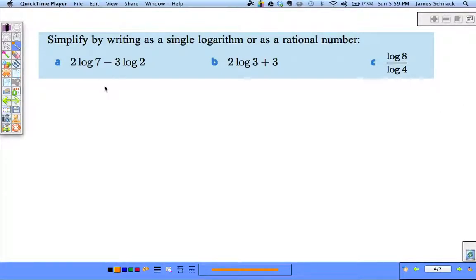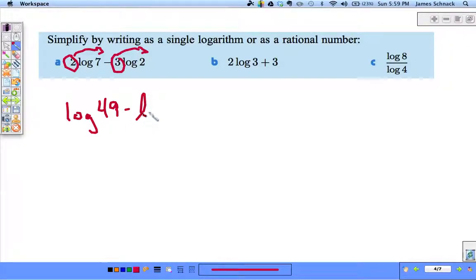Now, let's combine these together a little bit more. Similar questions. What can we do with the coefficient of 2 and 3? Well, can't we bring those up as exponents? So, it becomes log of 7 squared, or 49, minus log of 2 cubed, or 8. And now, we can write them as log 49 over 8.